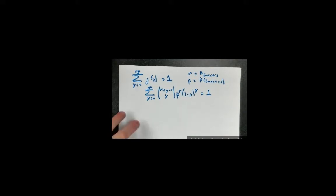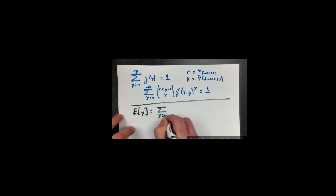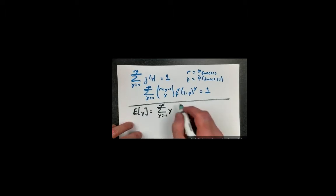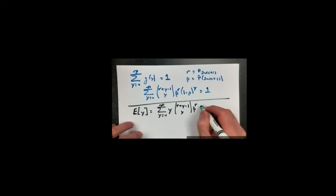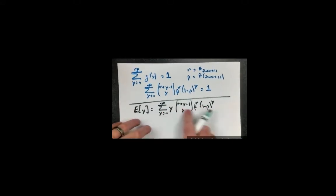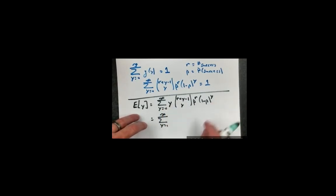What we want to calculate is the expected value of Y. The expected value of Y is the sum over all possible y values — from y equals 0 to infinity — of y times g(y), which is y times (r plus y minus 1 choose y) times p to the r times (1 minus p) to the y. The first thing to notice is that if y equals 0, the entire term is 0, so this is exactly the same as starting the index at y equals 1.